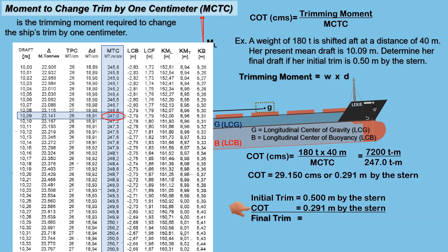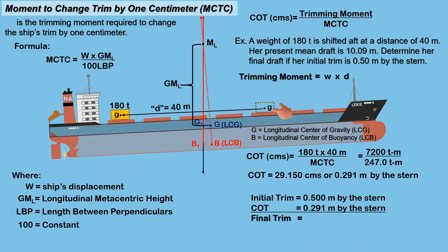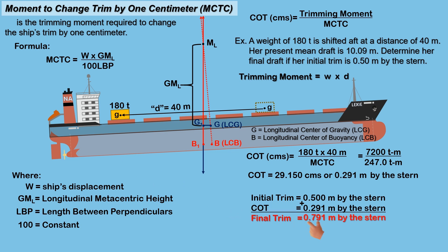Apply the change of trim to the initial trim to determine the final trim. Since we transferred a weight from forward to aft, the final draft aft increases, resulting in an increase in the final trim by the stern, so both values are added. The final trim is 0.791 meter by the stern.